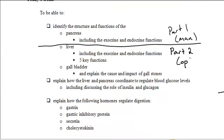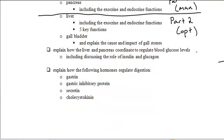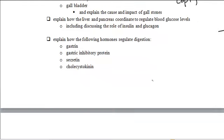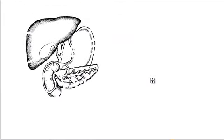As well, we're also going to look at how the liver and pancreas work together to regulate blood glucose levels and explain how hormones regulate digestion. So let's start with the pancreas.